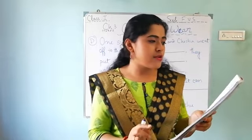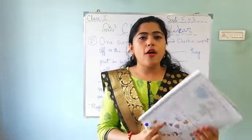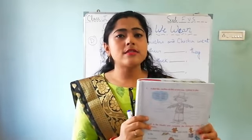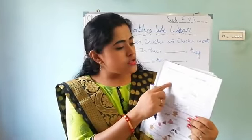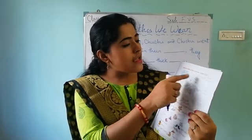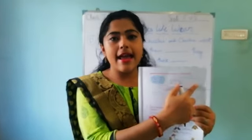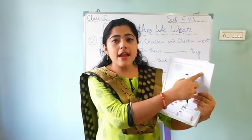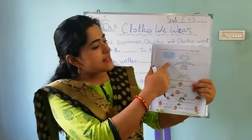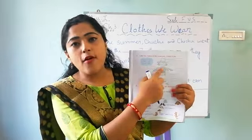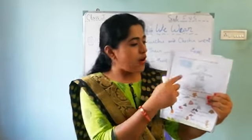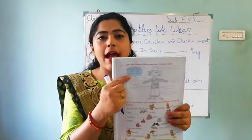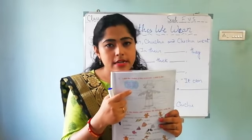There is a scarecrow. First of all, look — there is a hat on its head, on the scarecrow's head. So you have to write here 'hat'. Okay, there are options also. Next, this is a scarf on its neck. There is an option 'scarf' and you have to write 'scarf' on its neck.